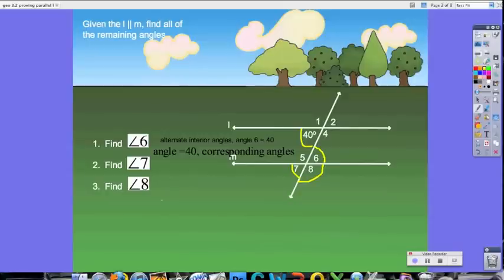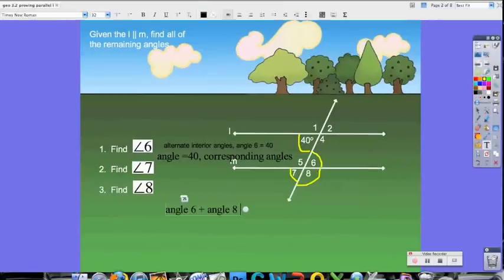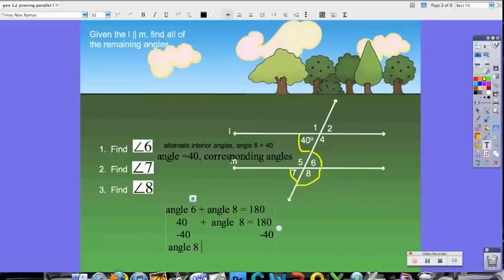So, theorem 5, the converse of alternate interior angles, really just states that if I have alternate interior angles that are congruent, then those two lines that are cut by the transversal are parallel. Same thing with converse of consecutive interior angles and alternate exterior angles. Again, we're proving that if those angles are congruent or supplementary in the consecutive angle case,